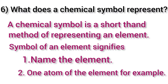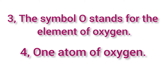Sixth question: what does a chemical symbol represent? A chemical symbol is a shorthand method of representing an element. The symbol of an element signifies: first, the name of the element; second, one atom of the element. For example, the symbol O stands for the element oxygen and one atom of oxygen.